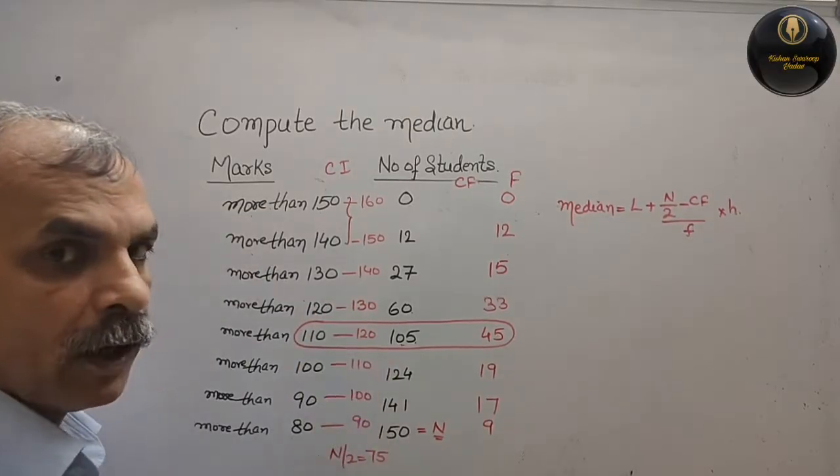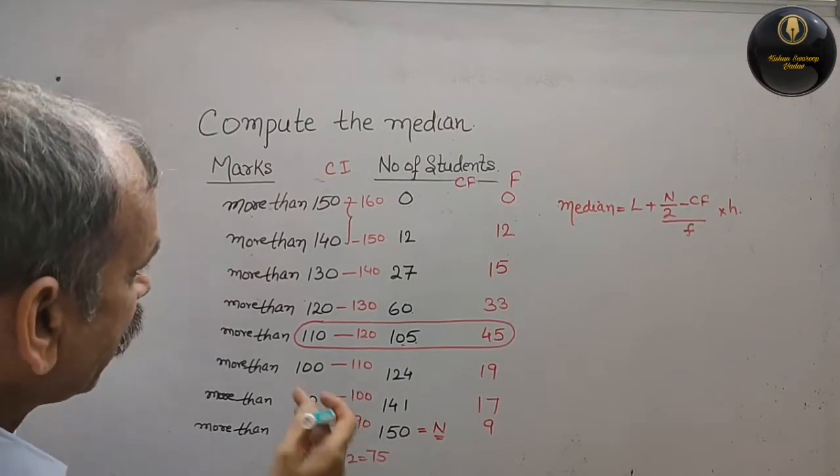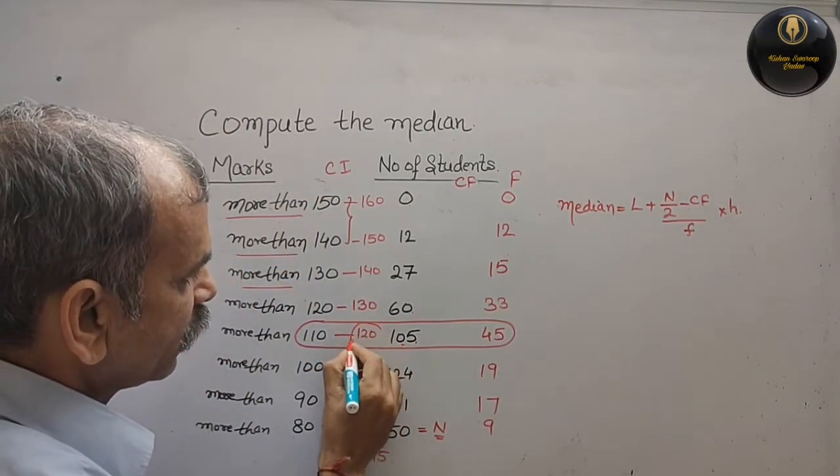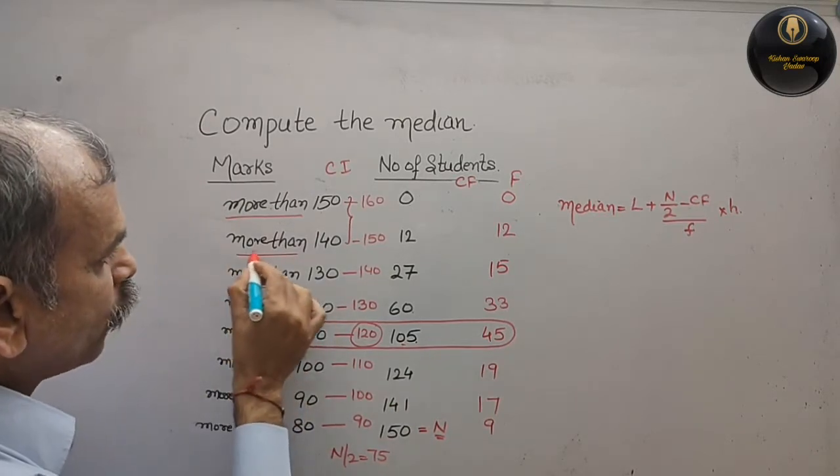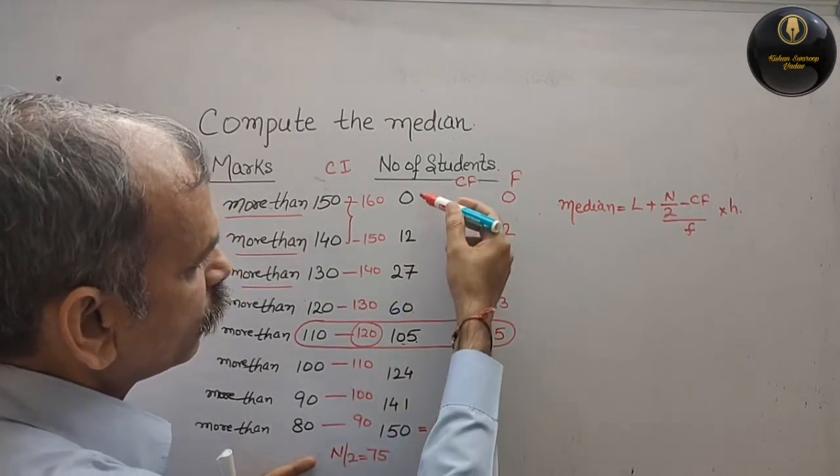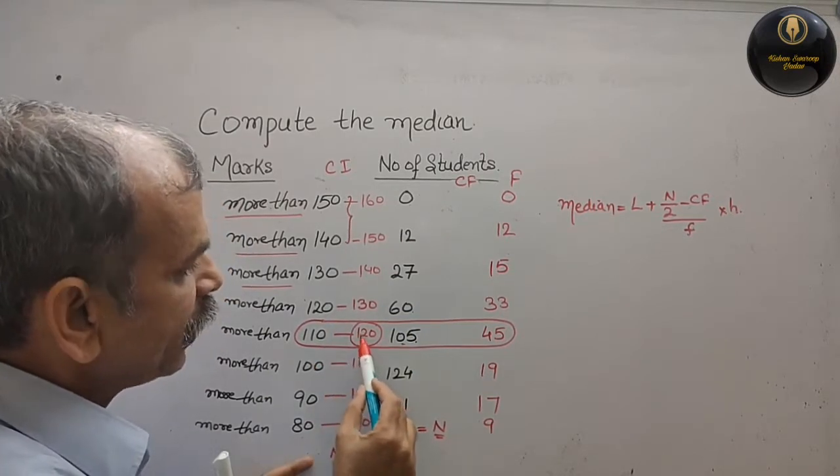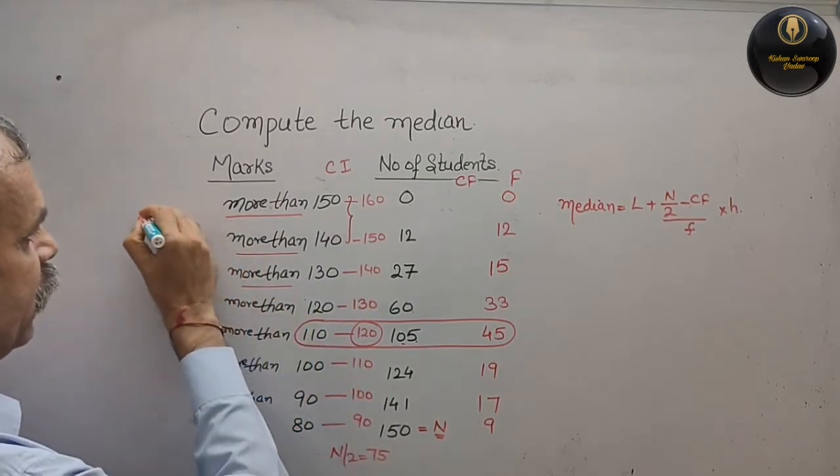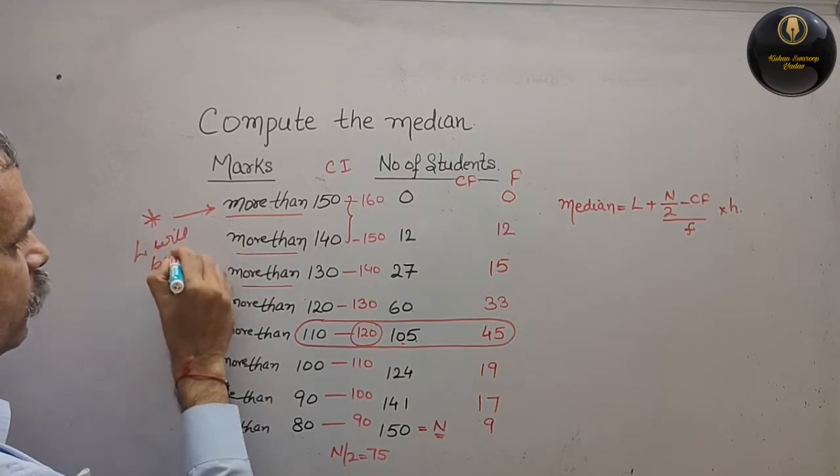An important thing is you have to keep in mind: what is that? Whenever more than will come, so your upper limit will become your this one. That means upper limit, which is your upper limit, will become your lower limit whenever more than will come. Why? Because you can see your frequency is in time. So that's why your lower limit is 120 now. Always, whenever more than will come, your lower limit will be your upper limit.